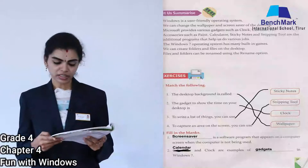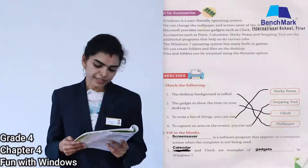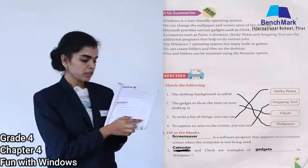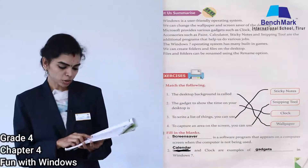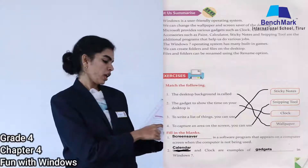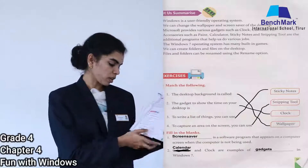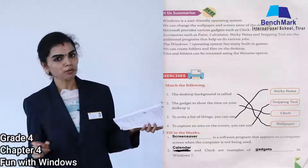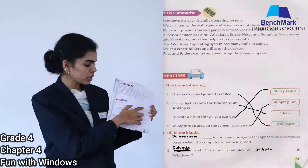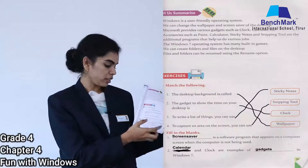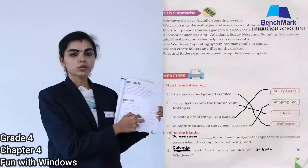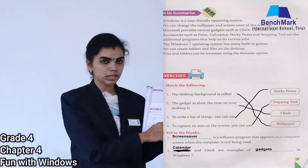Let us move on to the exercises. Please take page number 39 — Match the Following. Desktop background is called wallpaper, so you need to mark it to wallpaper. The gadget to show the time on your desktop is clock, so mark it to clock. To write a list of things you can use sticky notes, so mark it to sticky notes. To capture an area on the screen, we use snipping tool — mark it to snipping tool.